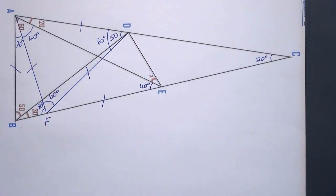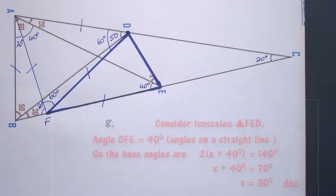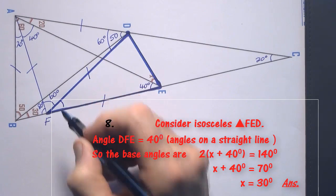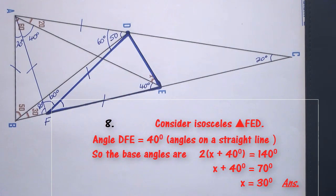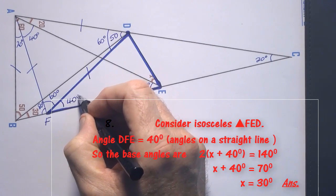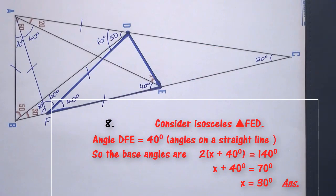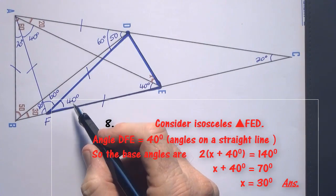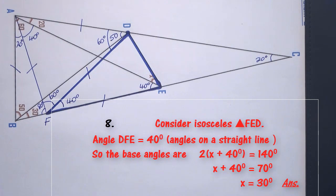For the final step, concentrate on triangle FED. We see it's isosceles. By angles on a straight line, we have 80 and 60, so this angle must be 40 degrees. The base angles will be equal: 2(x + 40) = 180 − 40 = 140, so x + 40 = 70, meaning x equals 30 degrees. That's our answer.